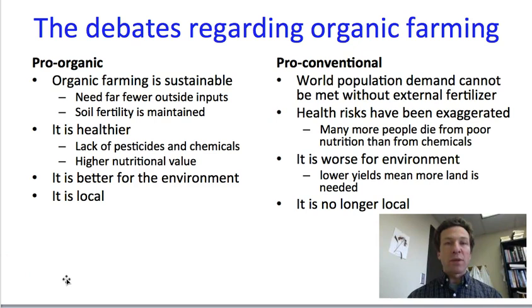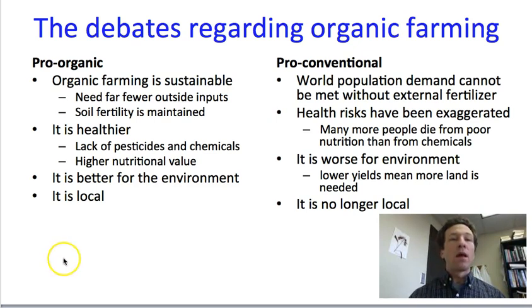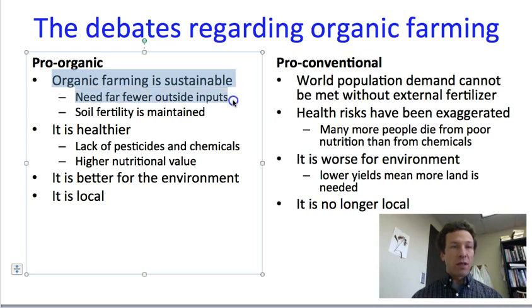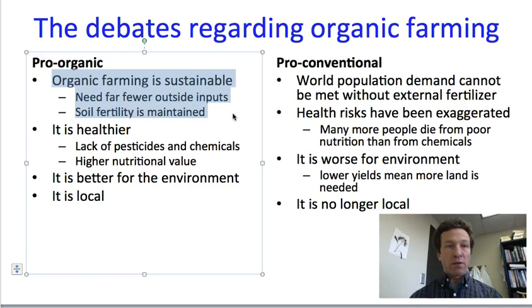There are debates between those in favor of organic farming and those in favor of conventional farming. On the pro-organic side, people argue that organic farming is a more sustainable option than conventional farming. It needs fewer inputs, especially fewer chemical inputs, and it maintains soil fertility without using fossil fuels to make nitrogen fertilizer.